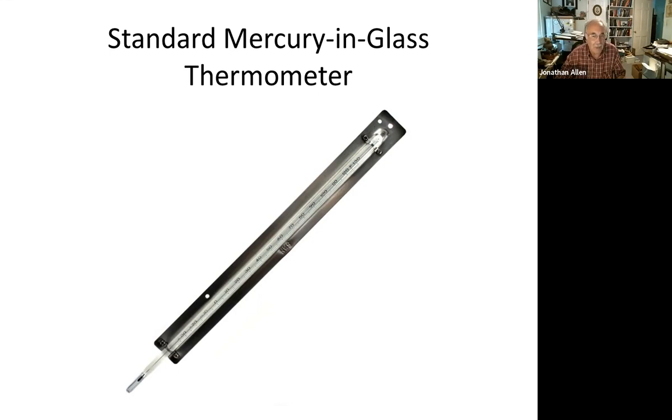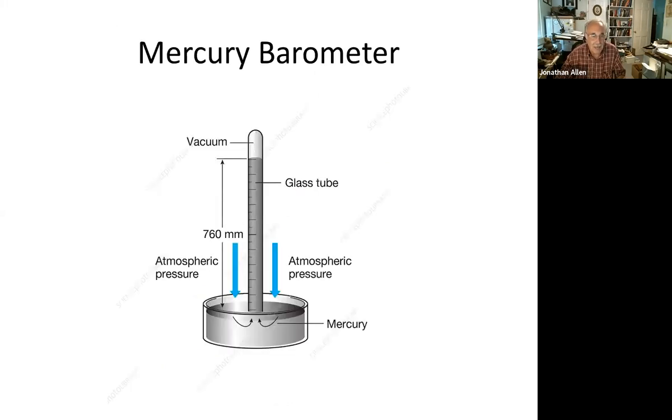The mercury barometer. The height of the mercury column indicates the difference between the vacuum and atmospheric pressure, and that's what the barometer does.